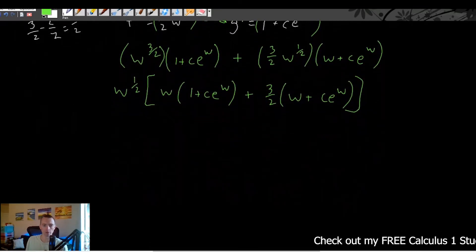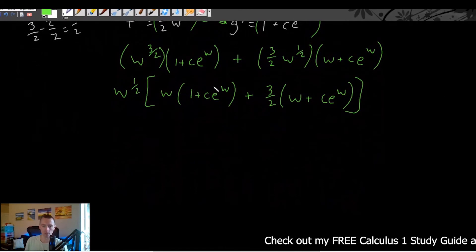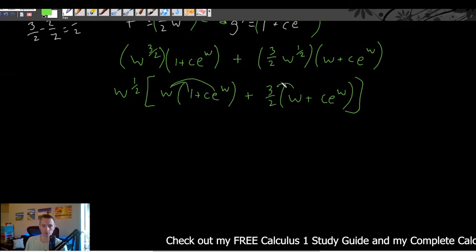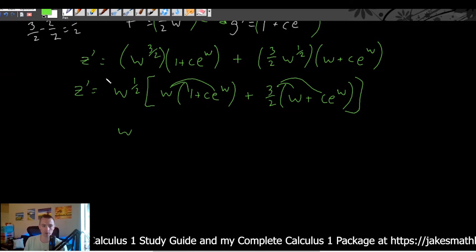Now from here, we could distribute these in here. So distribute the w in there, distribute the three halves in there. And keep in mind, this is all z prime, right? Our original function was z. So this is all z prime.